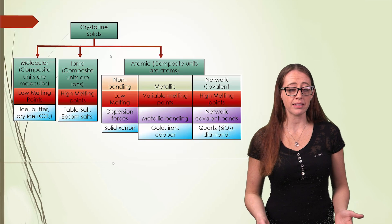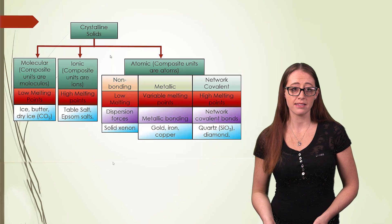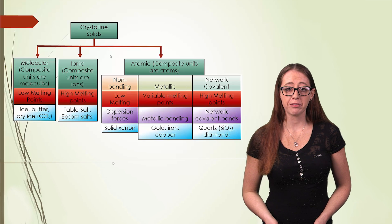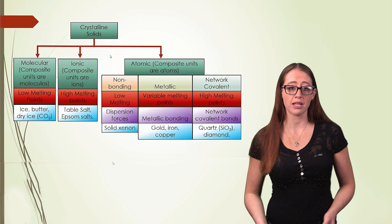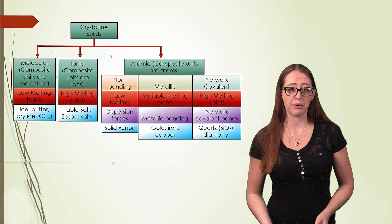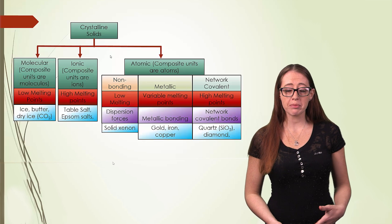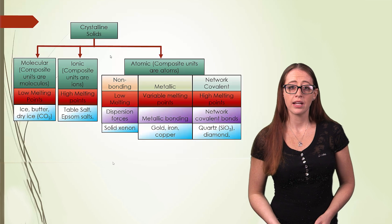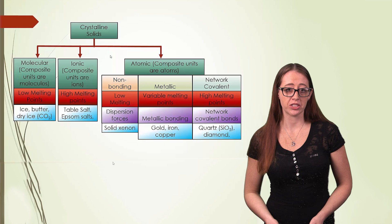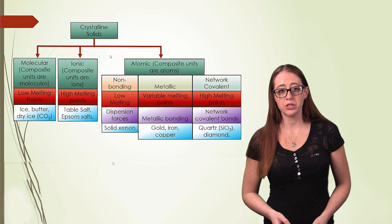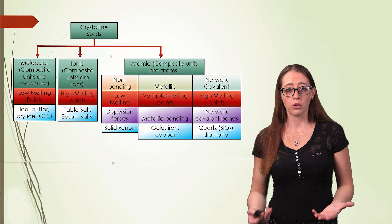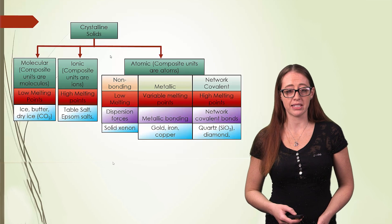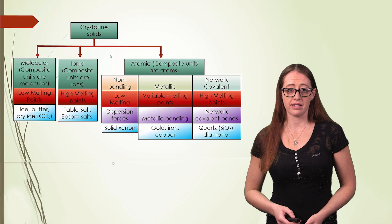So in review, we have our three main groups of solids, molecular, ionic, and atomic. And for atomic solids, we have three subgroups, non-bonding, metallic, and network covalent. You should be able to identify molecules or atoms and which type of solids they belong to. And then within reason, be able to guess or estimate or approximate which is most likely to have the highest or lowest melting temperatures if given a selection of these.